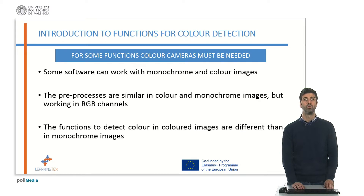Previously, to introduce the functions to detect color, it must be said that for some of them, color cameras must be used instead of monochrome cameras. Some processing softwares can work with both color and monochrome images. If we work with monochrome image, we can work with the algorithms studied previously. But if we want to work with color image, new algorithms have to be used, similar to OCR algorithms.